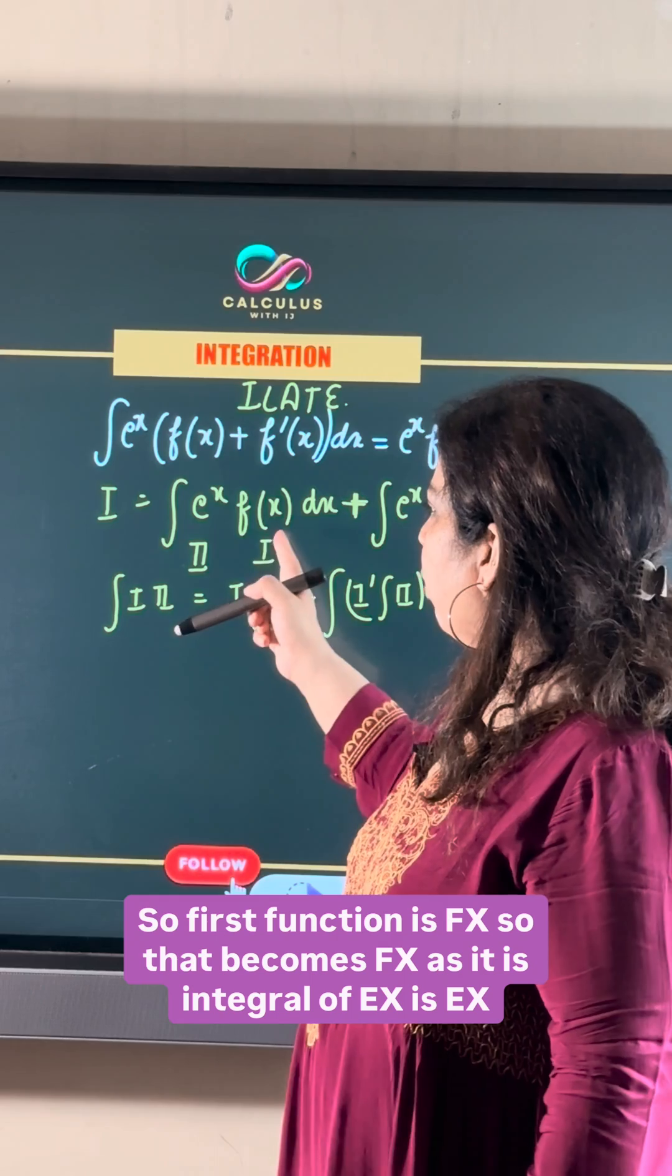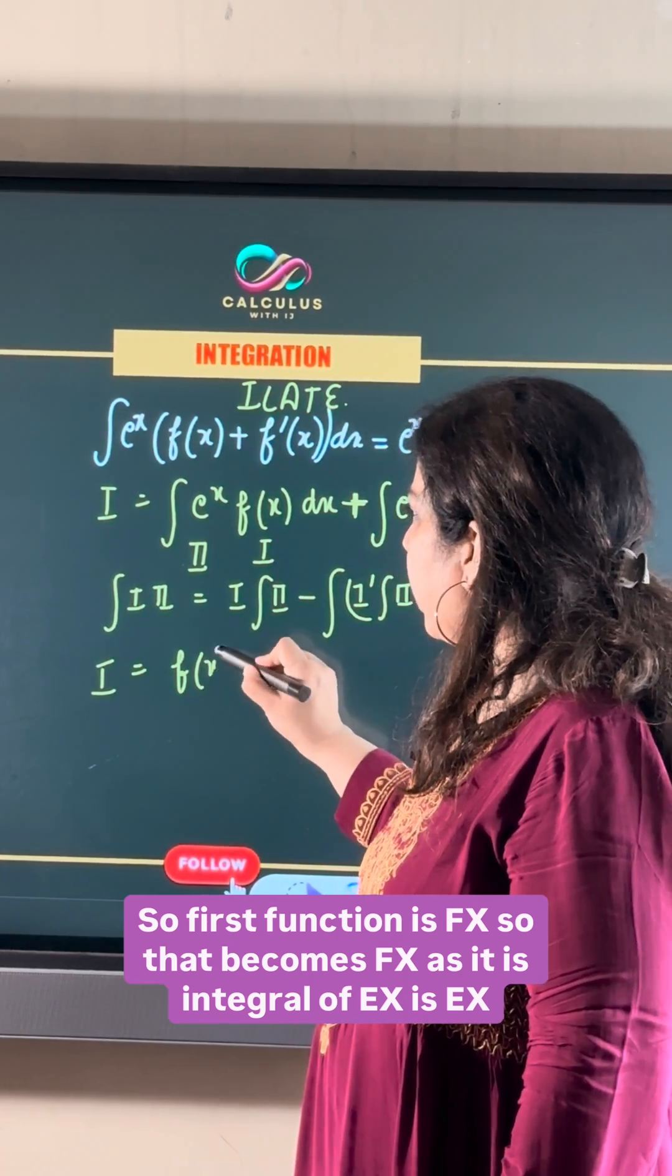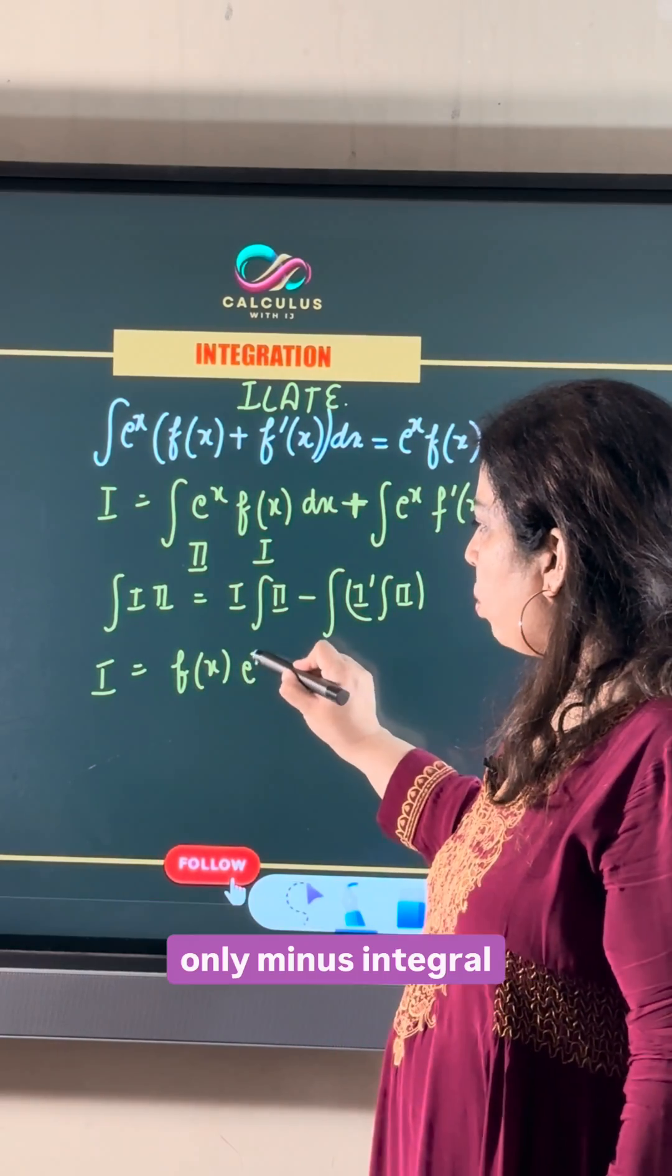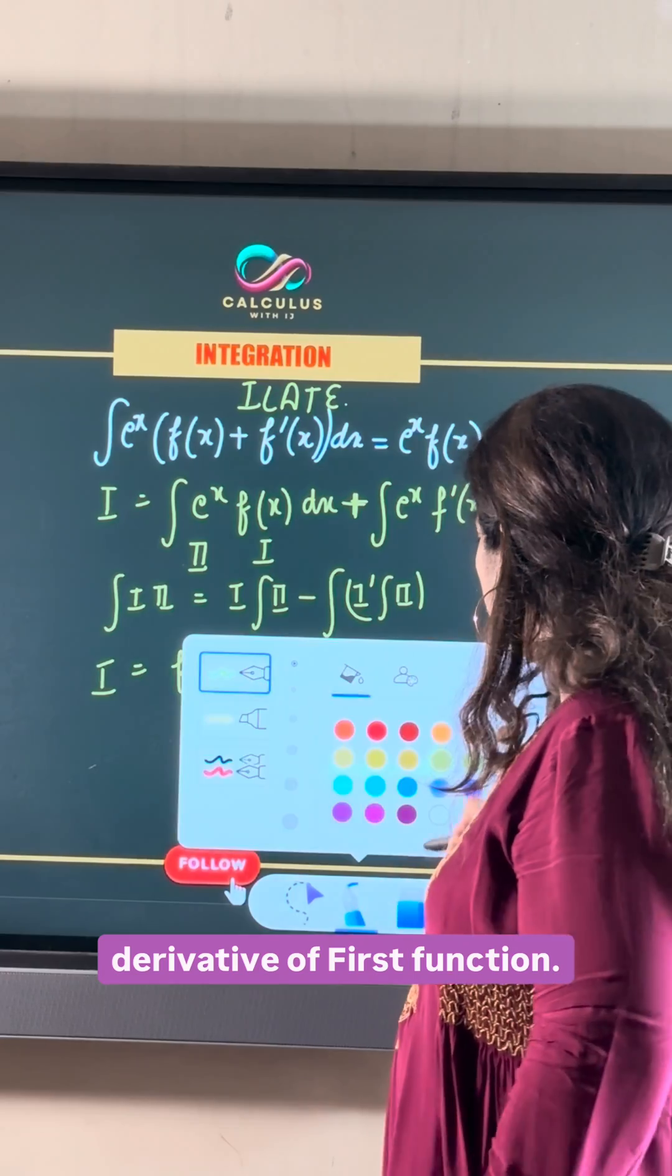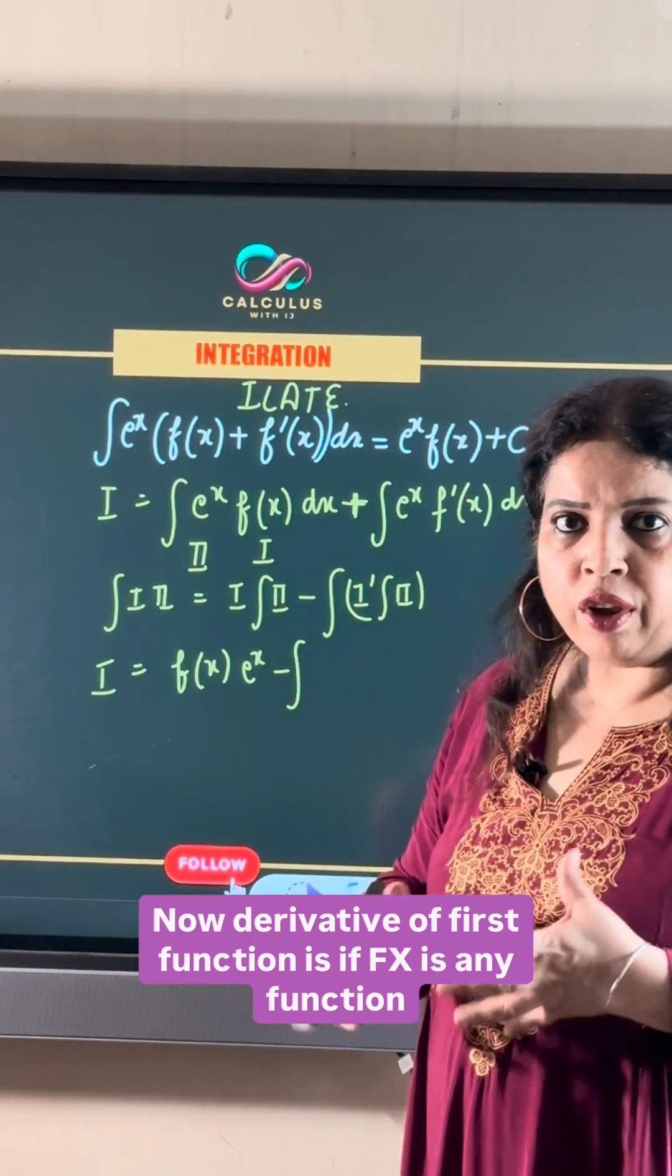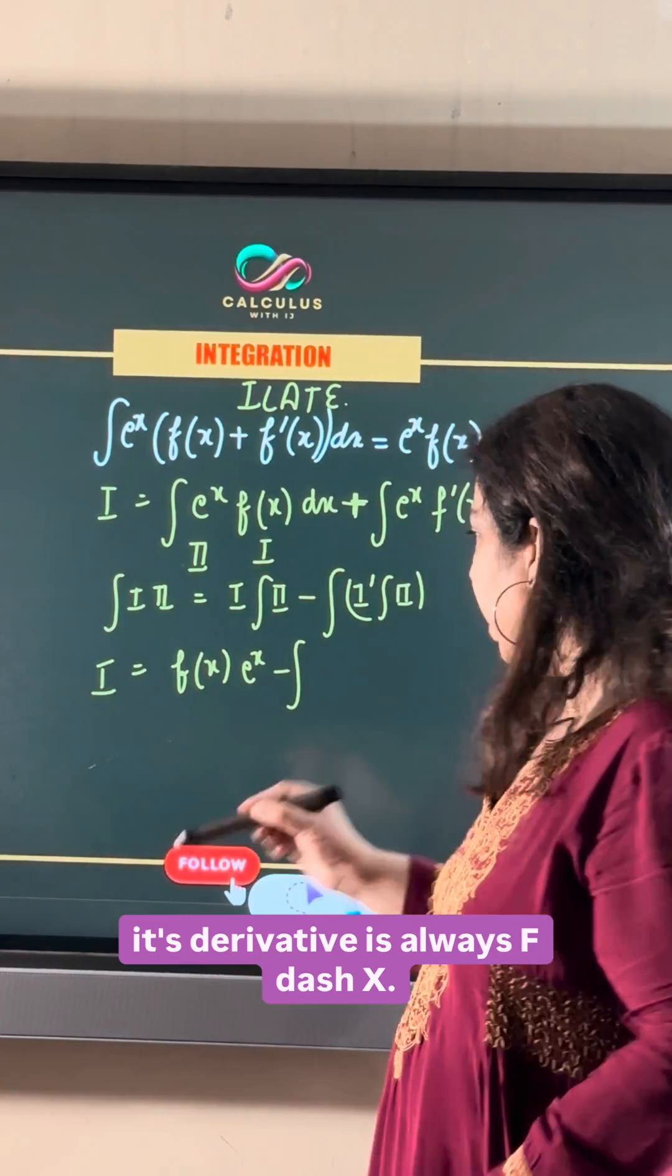So first function is f(x) so that becomes f(x) as it is, integral of e^x is e^x only, minus integral derivative of first function. Now derivative of first function is if f(x) is any function its derivative is always f'(x).